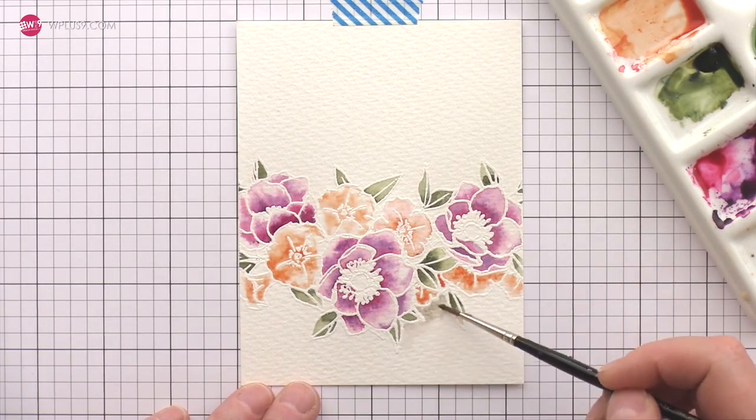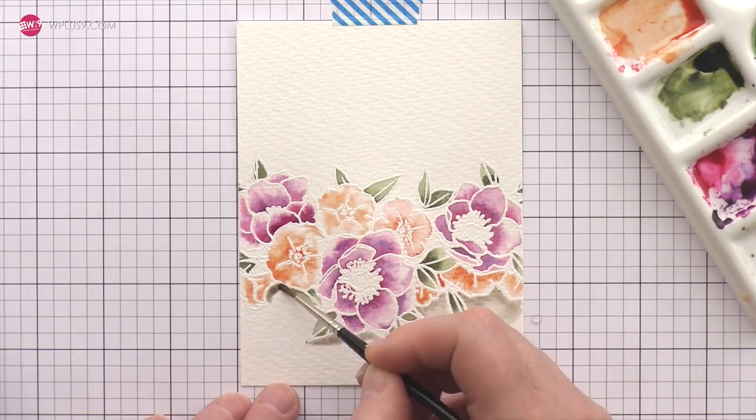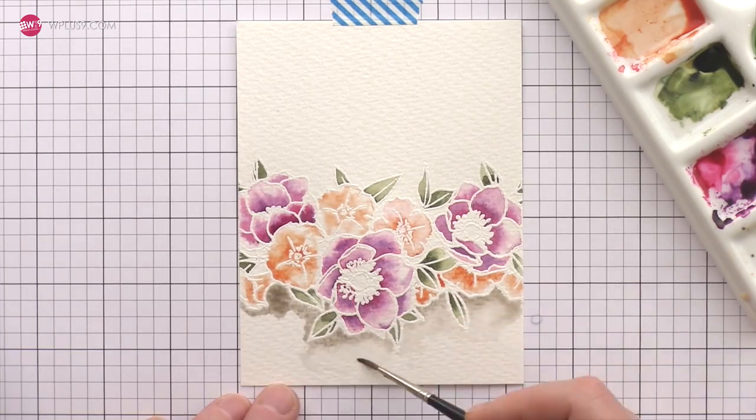I find that outlining an image with a neutral tone helps the colors to pop and so I'm using a very dilute sepia around the edges of the image and then softening the edges with a wash of water.